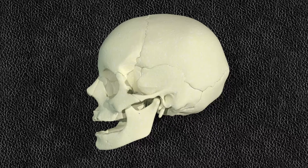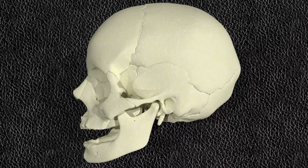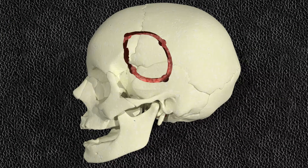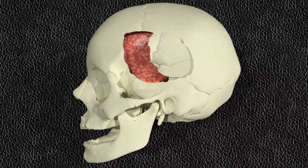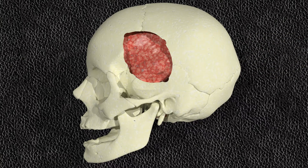In order to approach the sylvian fissure for the purposes of aneurysm dissection, the patient must firstly undergo a frontotemporal craniotomy. Burr holes are drilled into the skull around 3cm surrounding the pterional fissure. The bone is then cut using a craniotome where the bone flap is removed and the dura mater is incised in a semi-circular manner around the sylvian fissure.